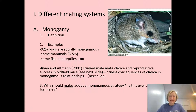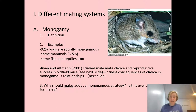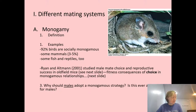We'll start with monogamy. Monogamy is defined as having one mate during a given breeding season — one male, one female. That doesn't mean lifelong monogamy necessarily, but it could mean serial monogamy or mating for life.